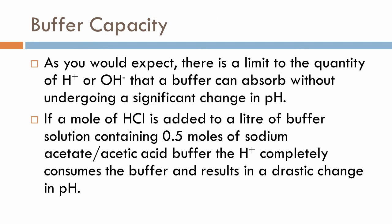Buffer capacity refers to the limit of a buffer's ability to resist pH change. You cannot continuously add acids or bases and expect the pH not to change. When all of the acid or all of the acetate ions are consumed by added hydroxide or hydronium ions, the buffering action is lost. This limit is called buffer capacity. To maintain buffering, appropriate quantities must be added at the start of the reaction.